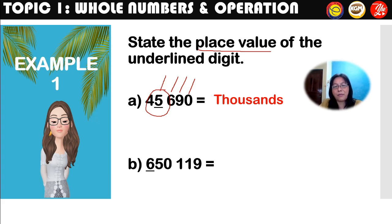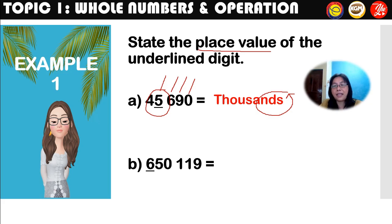Some children ask: what if I write 'thousand' without the letter S — will it be acceptable? The answer is no. Think of it like a place name, for example Seremban, spelled S-E-R-E-M-B-A-N. If you spell it as 'Seremba' without the N, it's not acceptable. The same applies here — the place value must be spelled 'thousands' with the S: T-H-O-U-S-A-N-D-S.